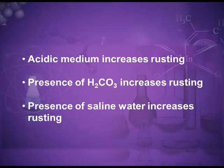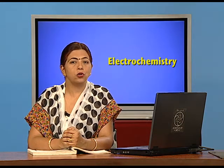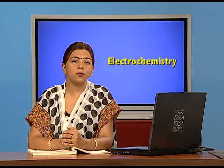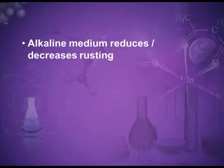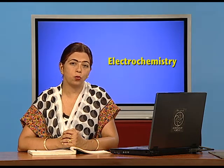Conditions that increase rusting: an acidic medium increases rusting; saline water also increases rusting because it contains many ions; carbonic acid and increased concentration of CO₂ increase rusting because CO₂ dissolves in water to form H₂CO₃, which provides hydrogen ions. However, an alkaline medium reduces rusting because it produces OH⁻ ions that neutralize the protons required for rusting. This is why corrosion is included in electrochemistry — it involves development of anode and cathode on the metal surface.